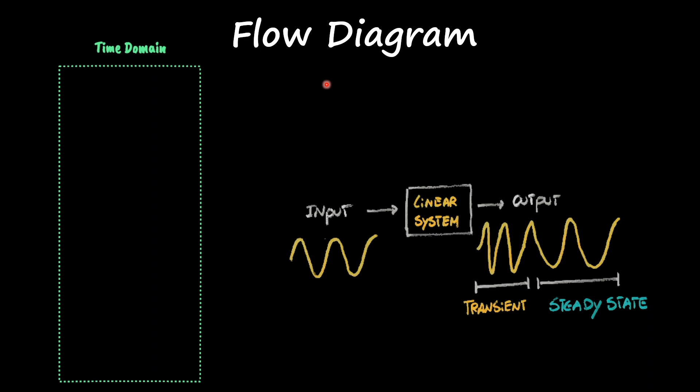All right, let's go over a flow diagram that will help us visualize a little bit more what we are going to do and where we are at. So far, we have been doing things in the steady state. And we're going to keep on the analysis of our linear circuits in the steady state.